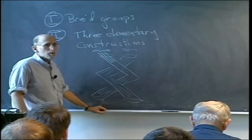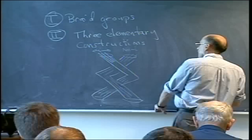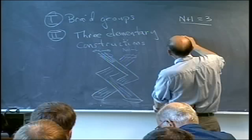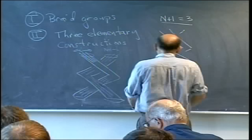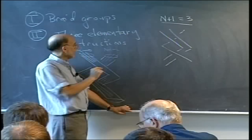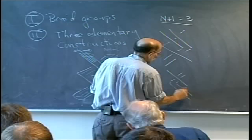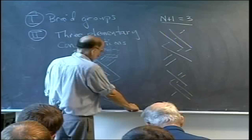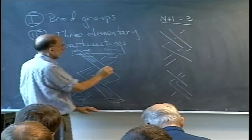Let me give you one or two examples. We could let N plus 1 be equal to 3. So you can imagine this three-stranded braid gotten by putting two strands in the first tube and one in the second, or putting one in the first and two in the second. In particular, this braid has a total of N plus 1 strands. Let me call this braid X sub i.